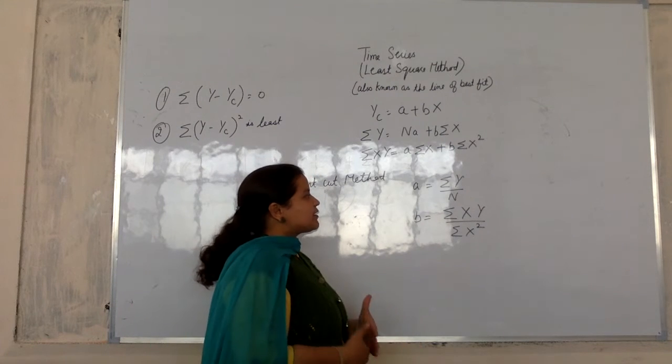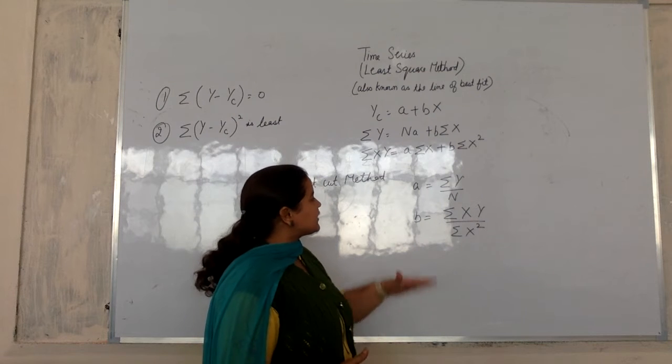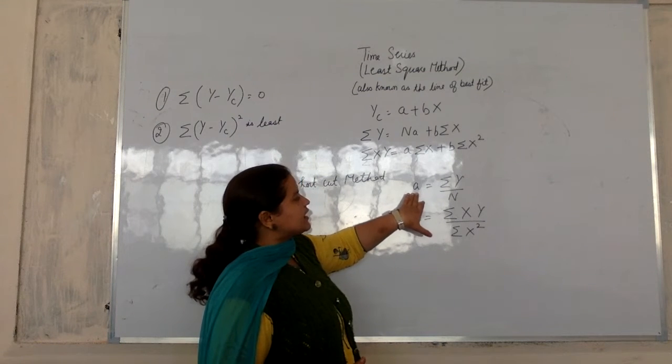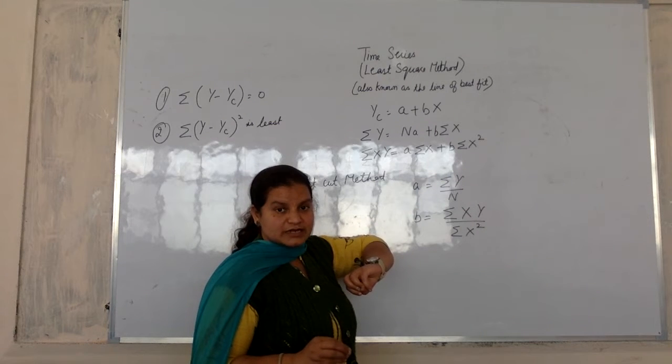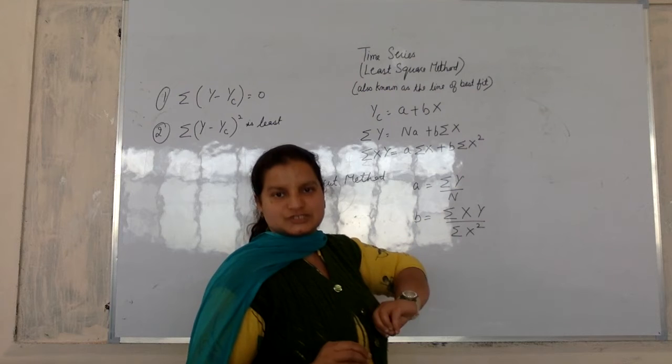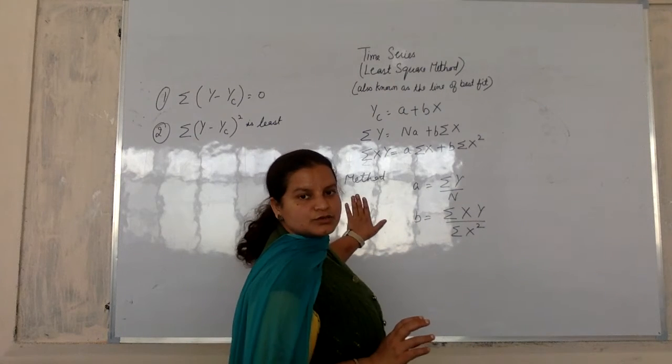Beyond this, you have a shortcut method. There is also a simple method, shortcut method. That is what you have to find out. Simple shortcut method you have to use when you have summation x is equal to zero, then you can use shortcut method.